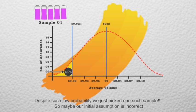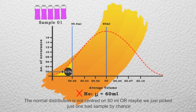Despite such low probability, we just picked one such sample. So maybe our initial assumption is incorrect. The normal distribution is not centered on 60 ml, or maybe we just picked one bad sample by chance.